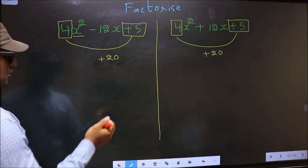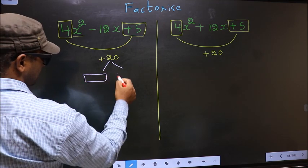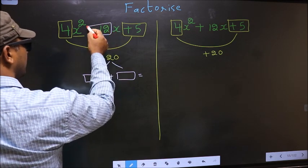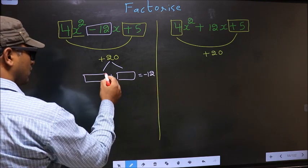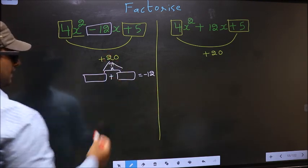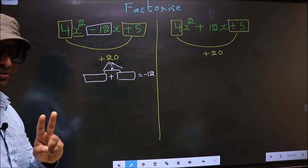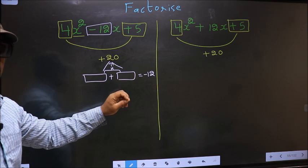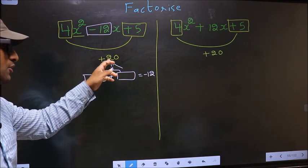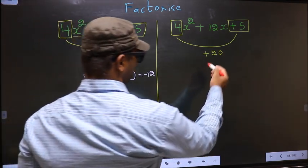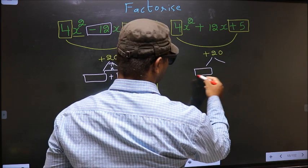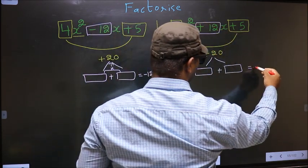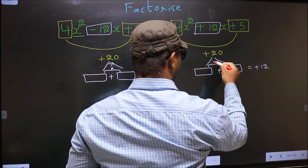Next, you should look out for two numbers such that when you add these two numbers you should get the middle coefficient — that is minus 12 — and when you multiply them, you should get plus 20. For the second expression, you should look out for two numbers such that when you add them you should get the middle coefficient, that is plus 12, and when multiplied, you should get plus 20.